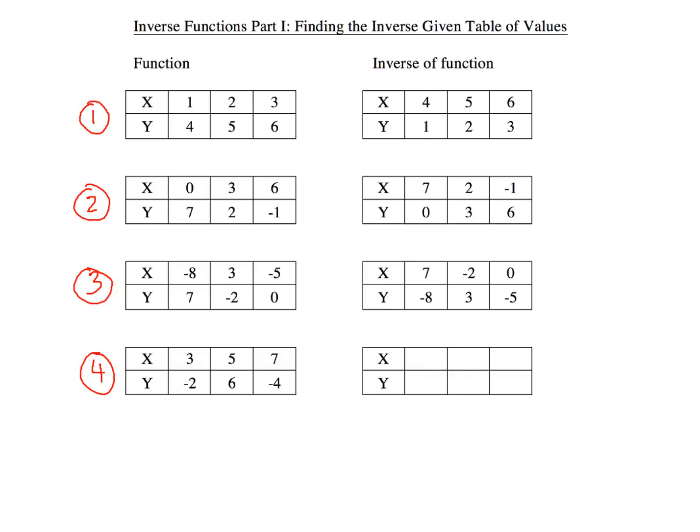Based on that, what would the values be for table number 4? The x's would be negative 2, 6, and negative 4, while the y's would be 3, 5, and 7. Alright, that's it. Pretty straightforward stuff. So the big thing here: interchange x and y values. That's it. No big deal.